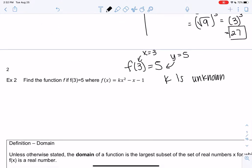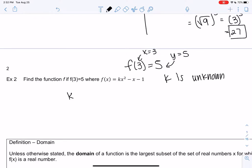But I know if I plug in 3, I should output 5. So I'm going to go ahead and plug that 3 in. So k times 3 squared minus 3 minus 1. And we know that equals 5. So I plugged in 3 for the x's. And we know the output is 5, the whole function.